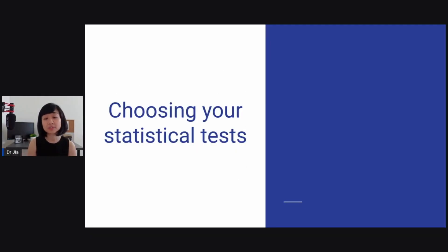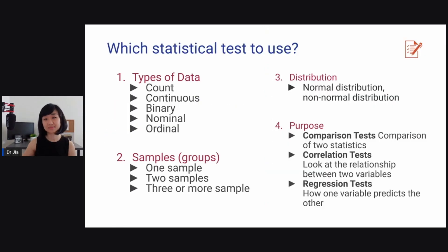In this lesson we will be focusing on how to choose your statistical tests. When you choose a statistical test, it is based on four main things. First is types of data. We are talking about count, continuous, binary, nominal, ordinal, the things we covered in the first lesson. The second one is samples or how many groups are there. One sample, two sample, three or more samples. The third criteria, distribution. Basically normal distribution versus non-normal distribution. And number four, purpose. What's the purpose of the statistical tests? Are you doing comparison tests? That means you are comparing two statistics. Are you doing correlation tests? Which is looking at the relationship between two variables. And the third is regression tests. Looking at how one variable predicts the other.